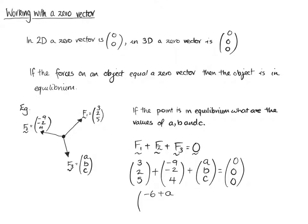We've got 3 plus -9, which is -6 plus A. And then we've got 2 plus -2, which is 0 plus B, so just B. And then we've got 5 plus 4, which is 9 plus C, equals (0, 0, 0). Therefore, that means that -6 plus A must equal 0. So therefore, A must equal 6.